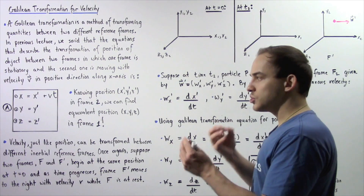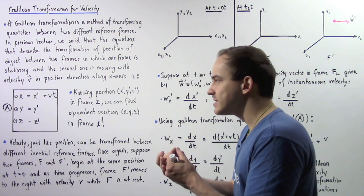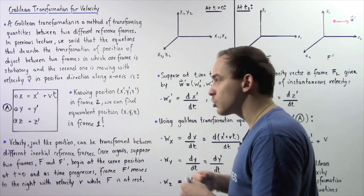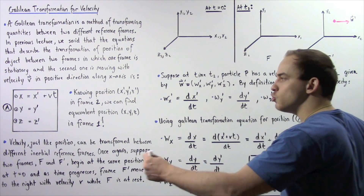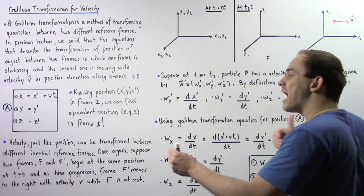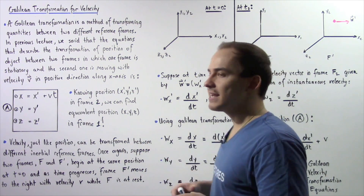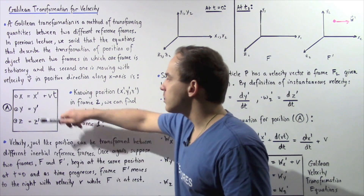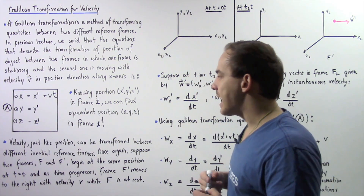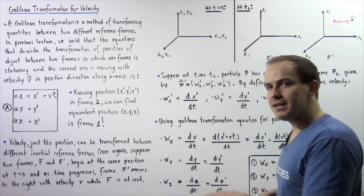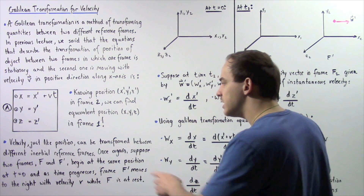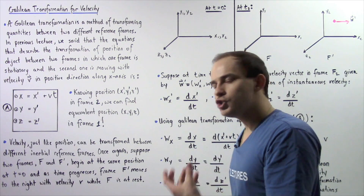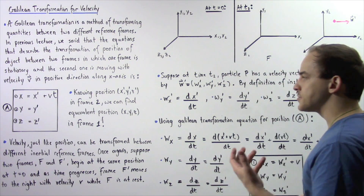The origins of the two frames exactly coincided. When time began progressing, frame 2 started moving in the positive direction along the x-axis, with no movement along the z or y-axis. Just like position, velocity can also be transformed between two different inertial reference frames.